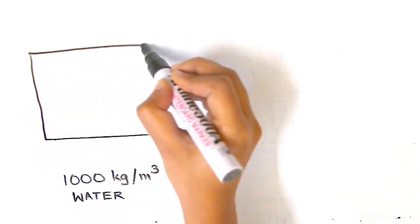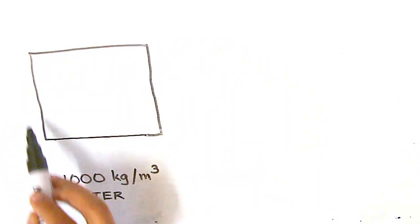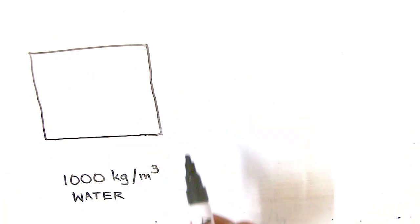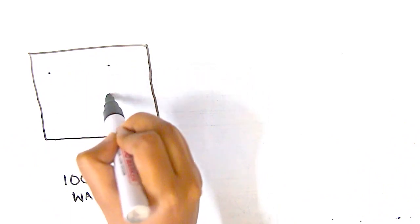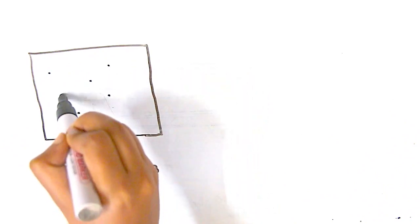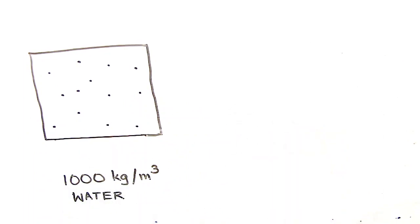This means if we take a cube of 1 meter on each side and fill it completely with water, that water weighs 1000 kilograms. That is the water density.